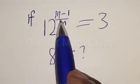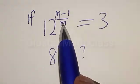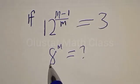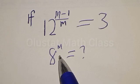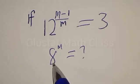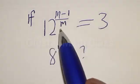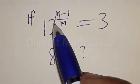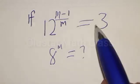If 12 raised to power (m minus 1) divided by m is equal to 3, what is the value of 8 raised to power m? Hi everyone, welcome to my class. In today's class, we want to quickly find the value of 8 raised to power m from this given exponential equation: 12 raised to power (m minus 1) divided by m is equal to 3.